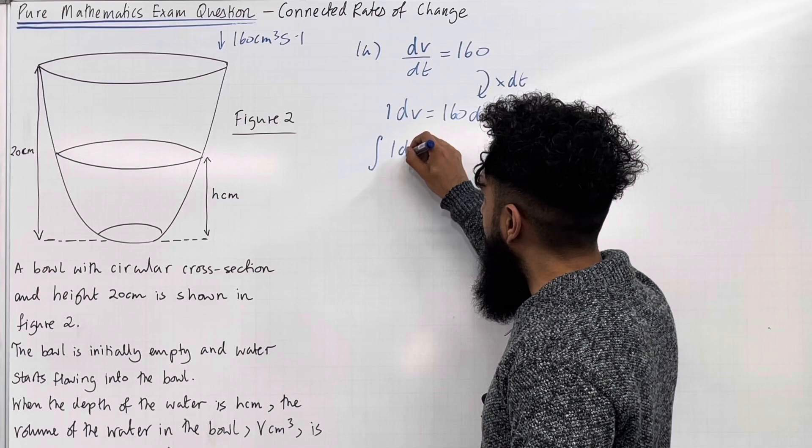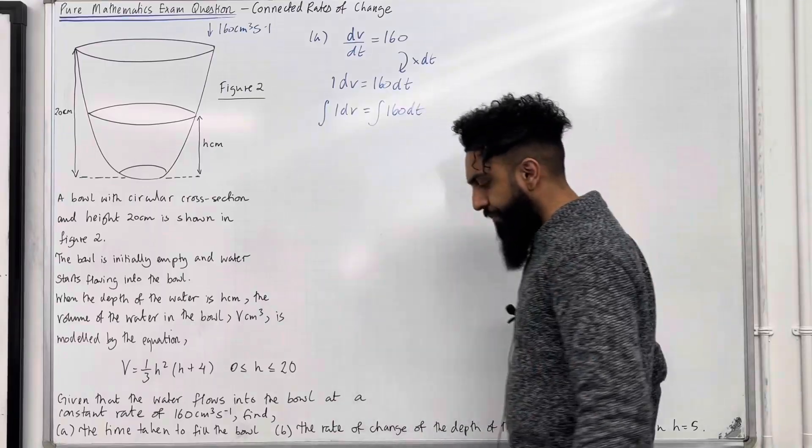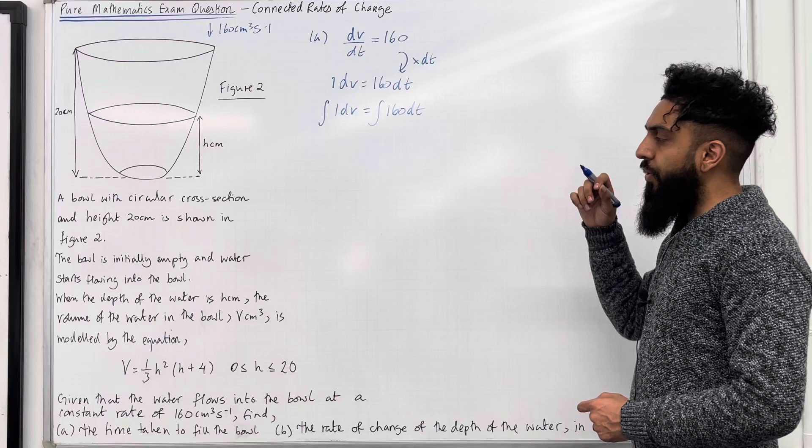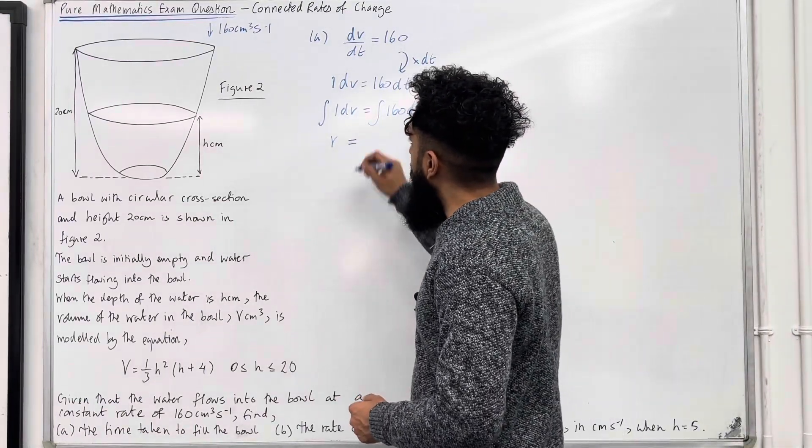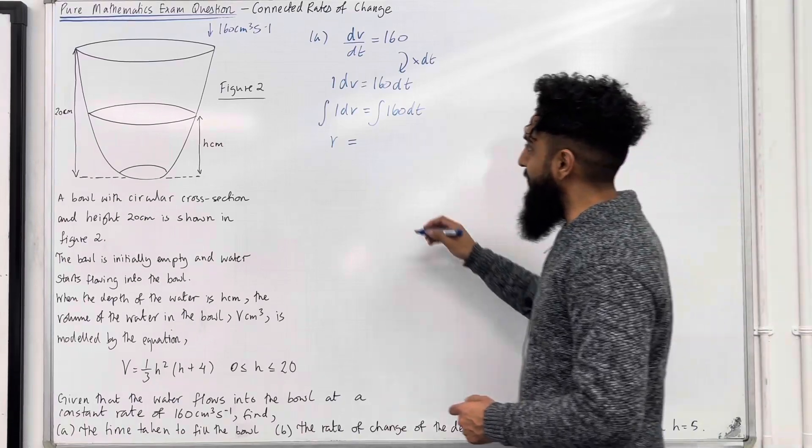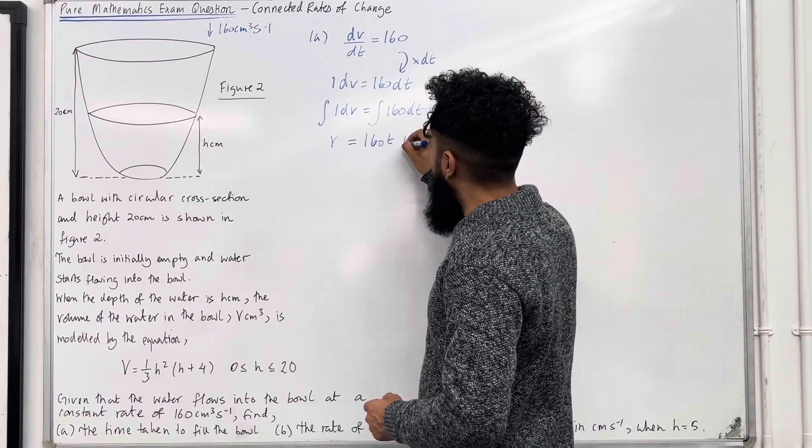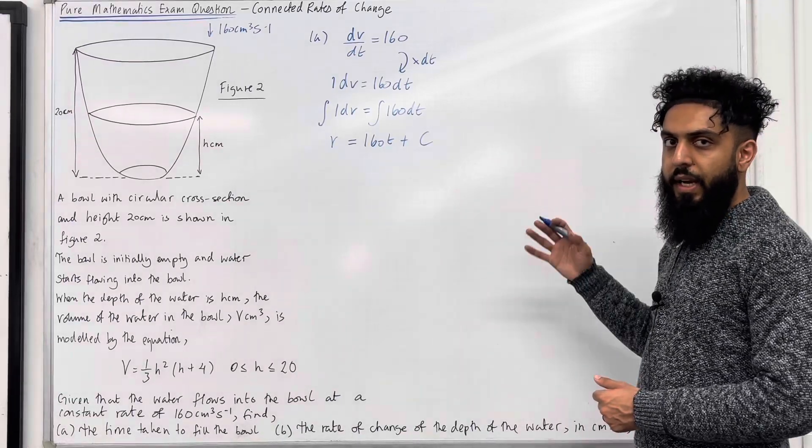Now, dv is the same as 1dv. We can now integrate both sides because we've got v on one side and t on the other side. So, the integral of 1dv has to equal the integral of 160 dt. If we integrate 1 with respect to v, we just get v. If we integrate 160 with respect to t, we get 160t plus c, the constant of integration. For simplicity, we keep it on the right-hand side.